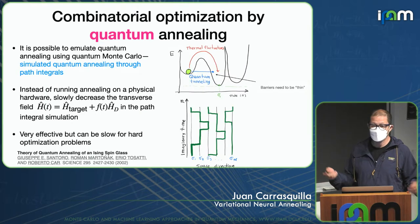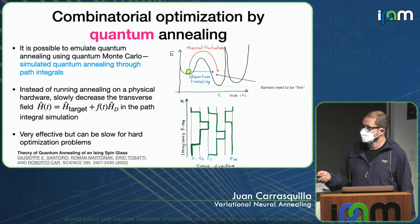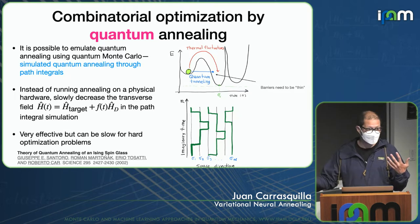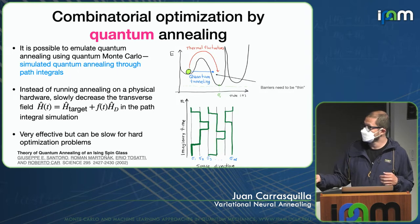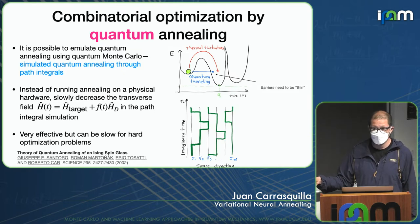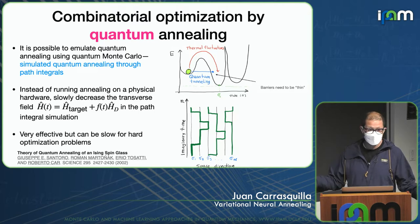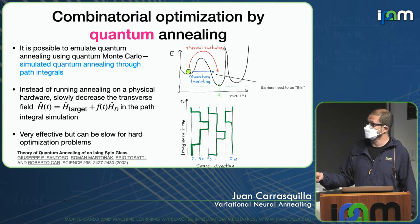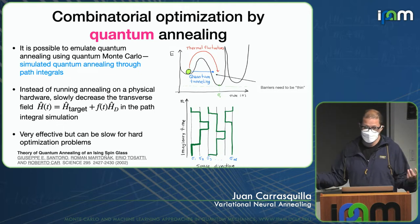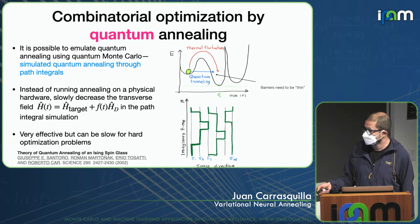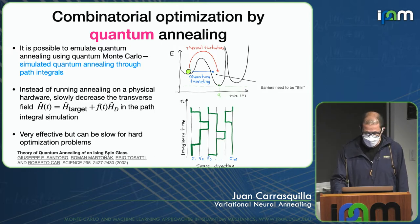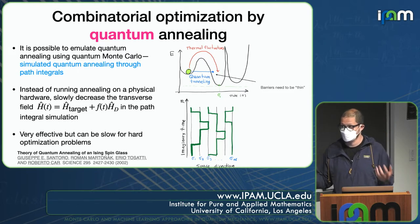It is possible to emulate quantum annealing classically using quantum Monte Carlo through simulated quantum annealing — basically path integral Monte Carlo on this Hamiltonian. You slowly turn down the quantum tunneling effect, and at the end you're hopefully solving the target Hamiltonian on a classical computer. This has been established in a paper by Santoro and collaborators. However, it can be slow if the combinatorial optimization problem is challenging.